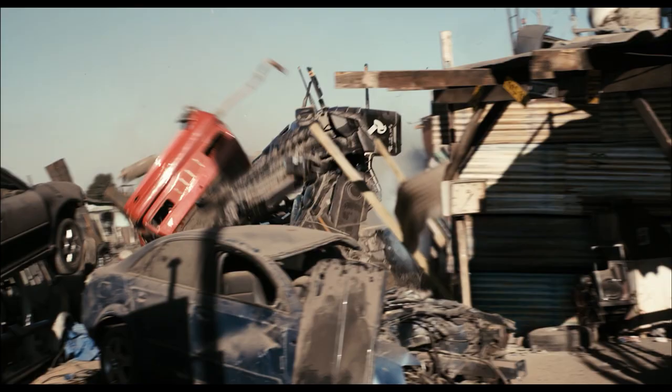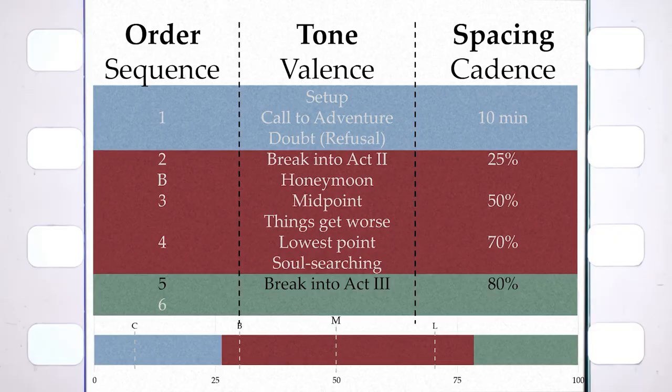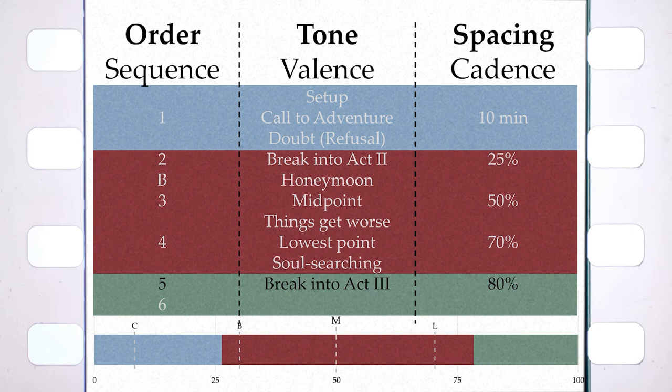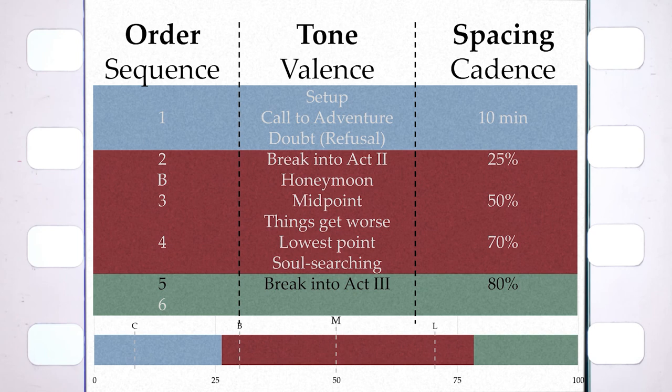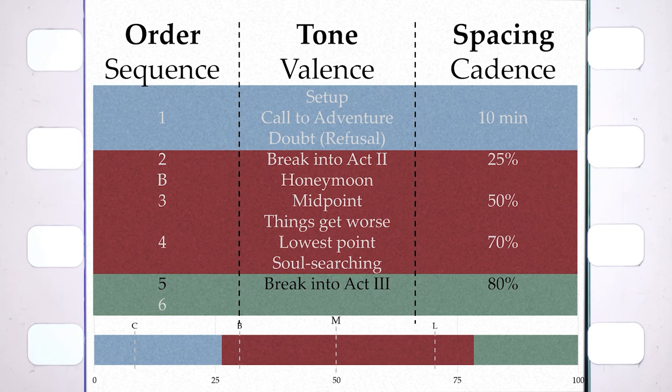76% into Groundhog Day, Phil commits to improving the lives of everyone in Punxsutawney, not just his own — he's ready to reflect Rita's light onto others. 78% into Spider-Man, Peter rejects the Green Goblin's offer to join him, having internalized Uncle Ben's message of love over self-advancement. 78% into The Wolfman, Talbot succumbs to his curse once more. 79% into Dodgeball, Lance Armstrong shows up to give LeFleur the pep talk he needs. 81% into District 9, Wikus steps into the alien armature sent by Christopher Johnson's son — ready to integrate his human and alien elements to break some rules. We've finally gotten out of act two, which usually runs 50 to 55% of a film's total runtime.